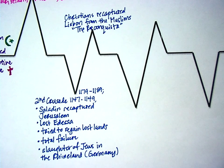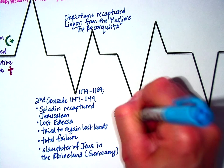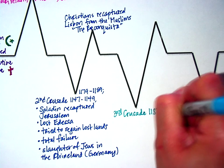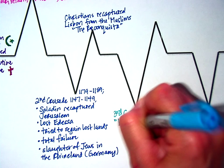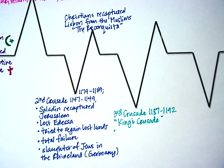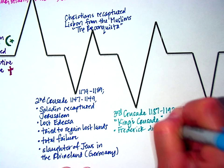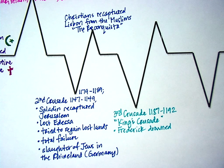Moving on to the Third Crusade — you can see there are bad things that happened but also one good thing, and it is the very last good thing that happens for the crusaders. The Third Crusade was from 1187 to 1192 and was nicknamed the King's Crusade, because the major leaders of kingdoms and empires decided it was their turn to take up the cross. Leaders like Frederick, Richard the First, and King Philip gathered their armies of lords and knights. Frederick drowned while trying to cross a river.